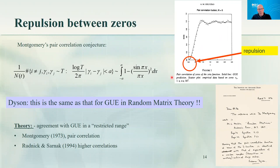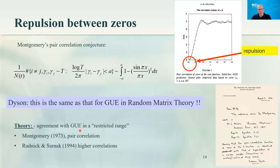These conjectures are not proven yet. Montgomery proved that the Fourier transforms of the two distributions agree in a restricted range, and one can compute higher-level correlations — three-level, 17-level — which under similar restrictions also agree. So there's actually quite reasonable evidence for this, much more so than in the case of quantum chaos. This is an example of these new statistics as seen in nature.